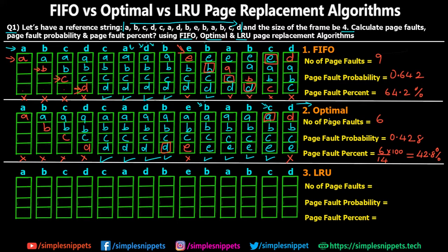Now let's move to the last algorithm: LRU. Again for the first four steps, page fault is definitely going to happen since there was nothing in the frames, so I mark X and load all values. Moving to step five, C is required — C is already there — and for the next steps requesting A, D, and B, all pages are already in memory, so no page faults. I write the frames as is.